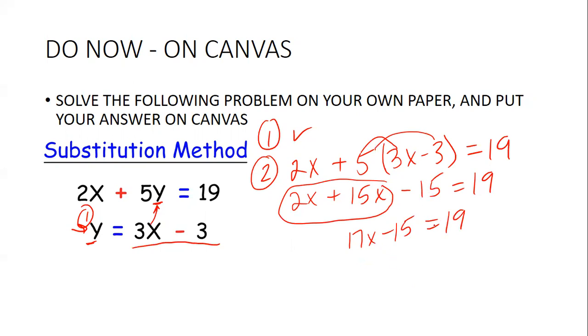Now we're going to isolate x. So to get x by itself, I'm going to add 15. What I do to one side, I do to the other. And that leaves me with 17x equals 34. Divide by 17. I get x equals 2.